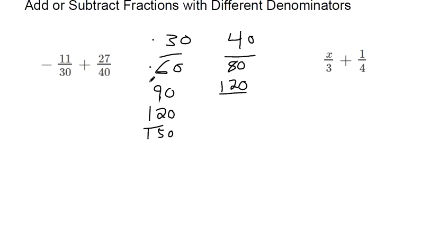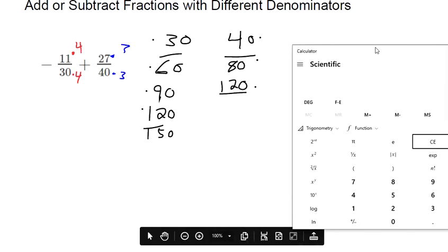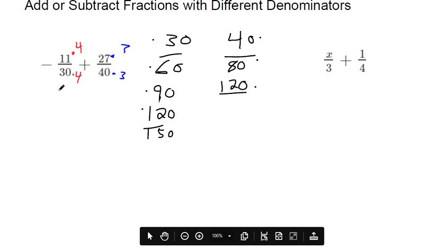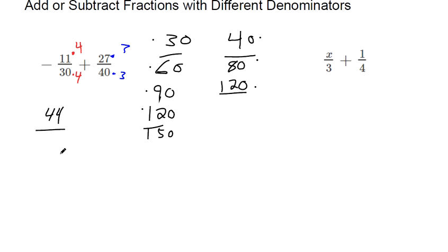So you've got to multiply the first fraction by 4 and the second fraction by 3s. I'm going to multiply this by 4 and this by 4. Multiply this by 3 and this by 3. So if you do that, 11 times 4 makes 44.